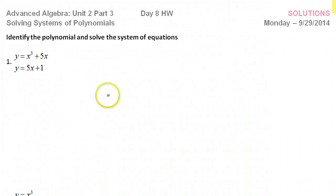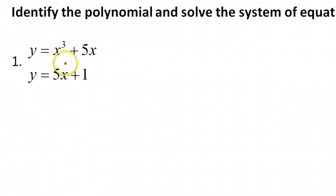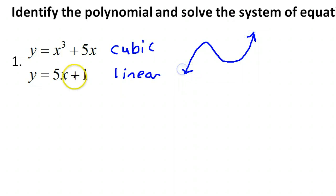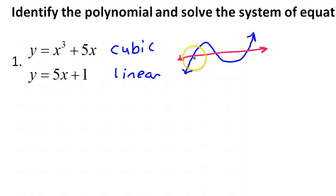In this lesson we will continue our study of solving systems of polynomials. For problem number one, we have a cubic function and a linear function. A positive cubic is like an N-type shape in general, and then we have a linear function. We won't know the exact shape until we solve the problem, but this is in general what we're dealing with — a cubic and a line.